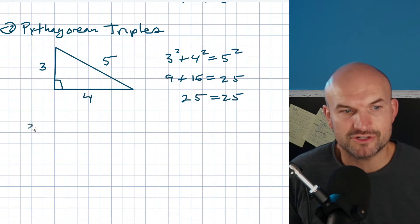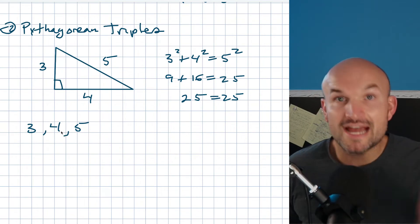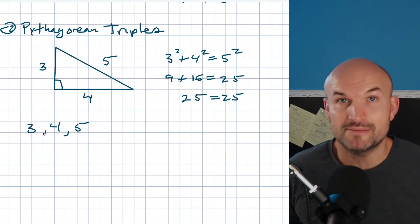Here's the cool thing about Pythagorean triples: This 3-4-5 triangle is a Pythagorean triple, and guess what? Every multiple of that is also going to be a Pythagorean triple.